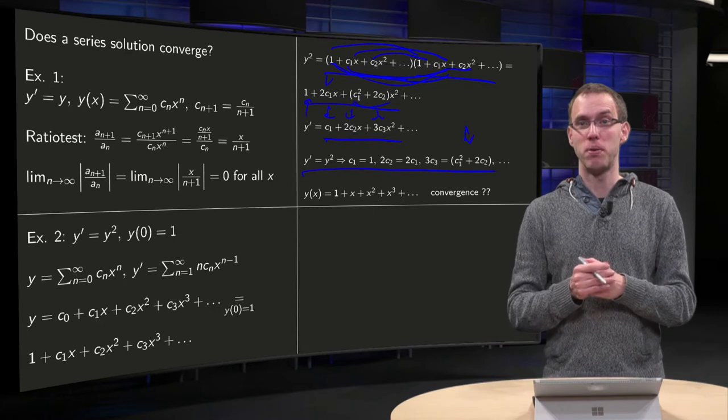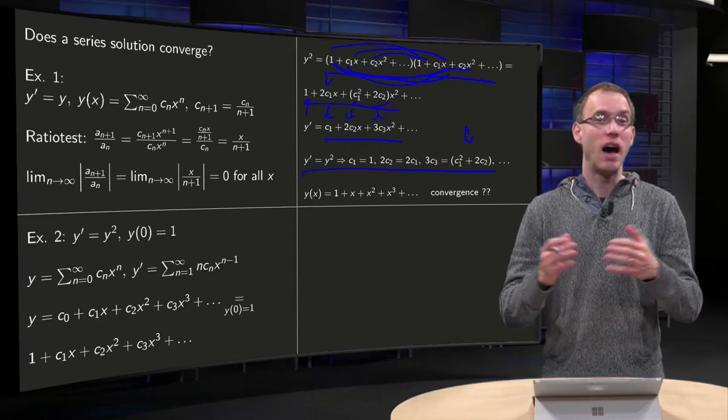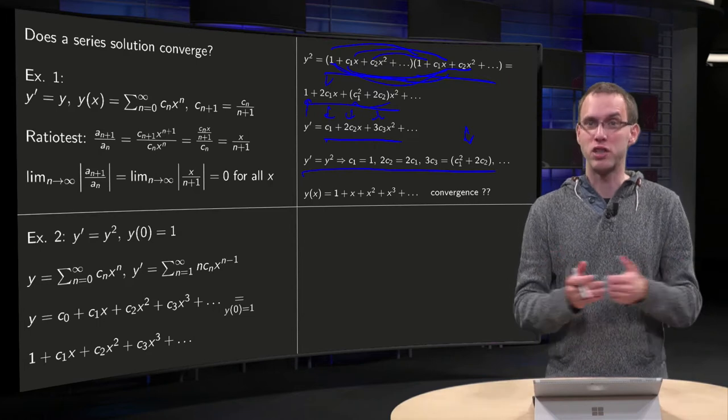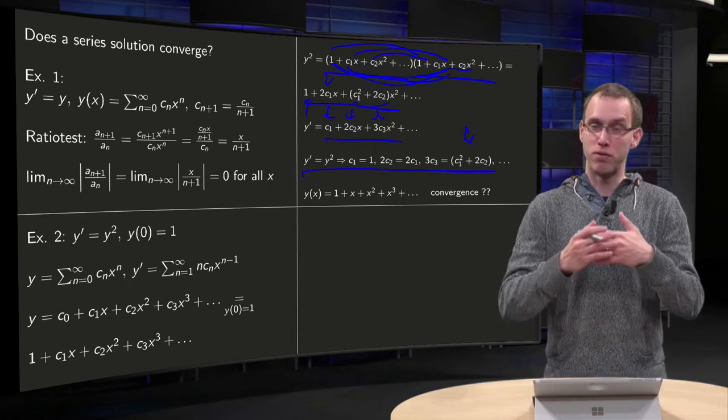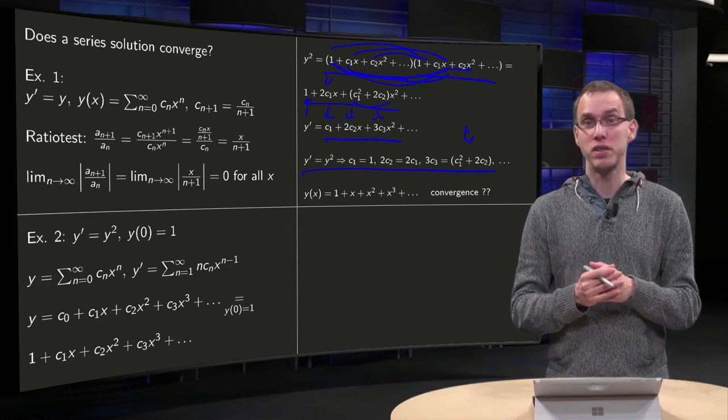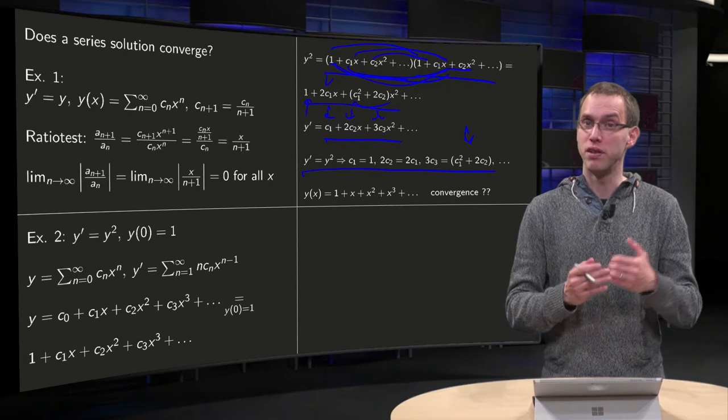For what values of x does the power series converge? We don't know, because we cannot apply the ratio test. For x equals 0 everything is fine, but for bigger x, it's not clear at all for what values of x this power series is going to converge, if at all.